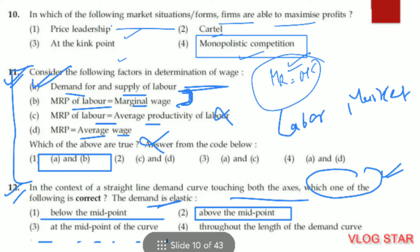Question number 11. Consider the following factors in the determination of wages — which of them are correct? At equilibrium, demand is always equal to supply, so the first statement is correct. The second is also correct because in the labor market, the marginal revenue product of labor can be considered as demand and the marginal wage as supply.